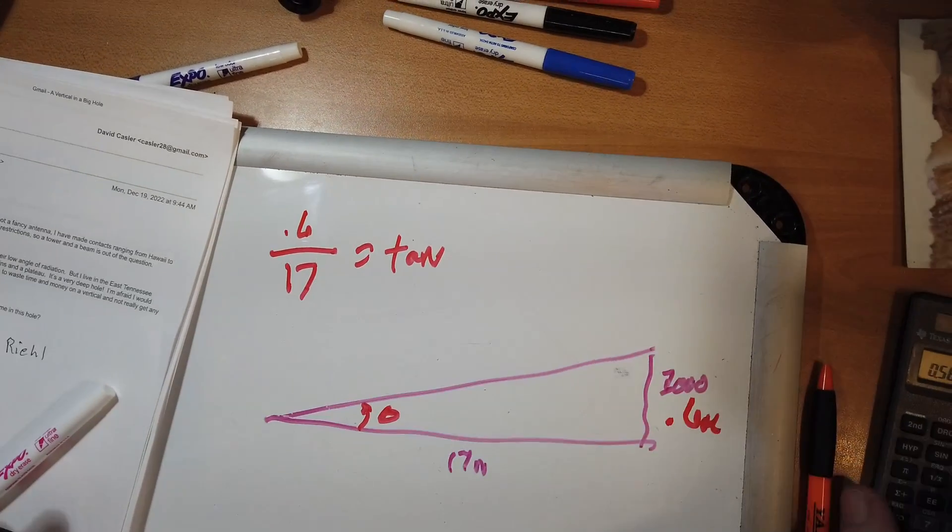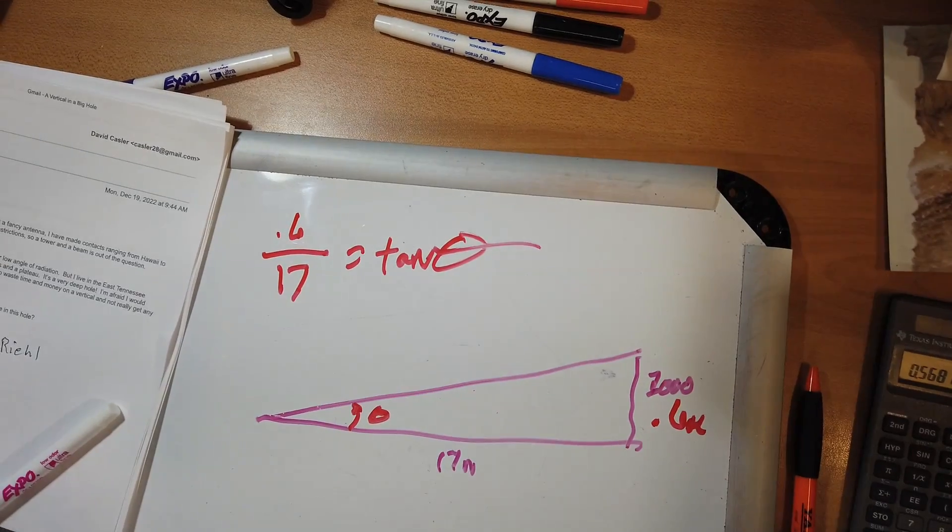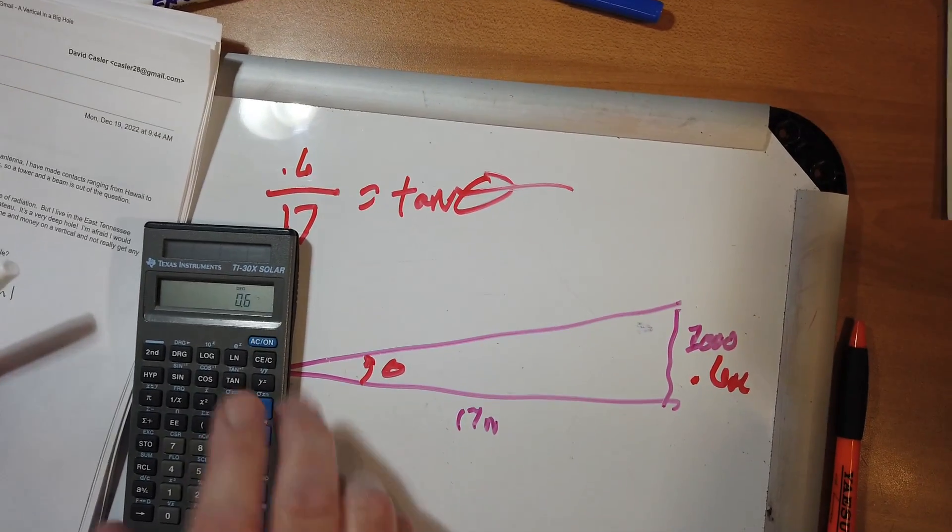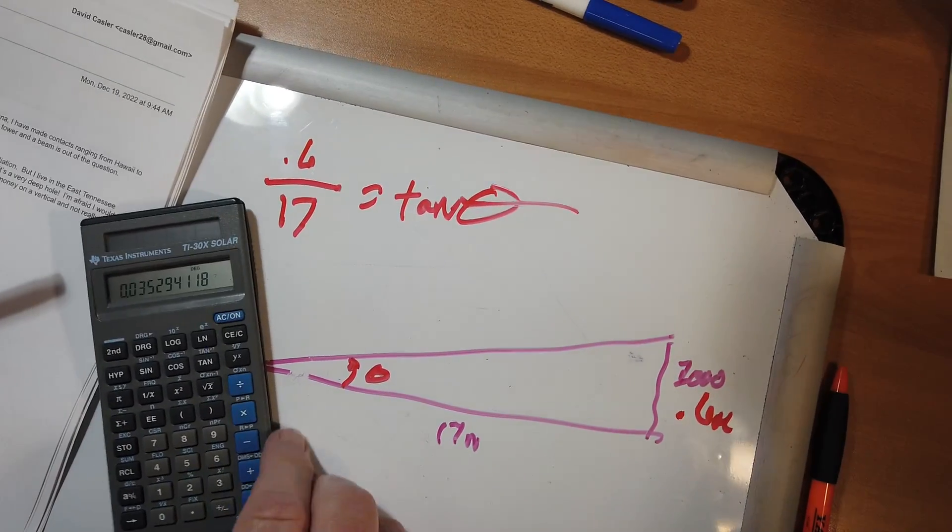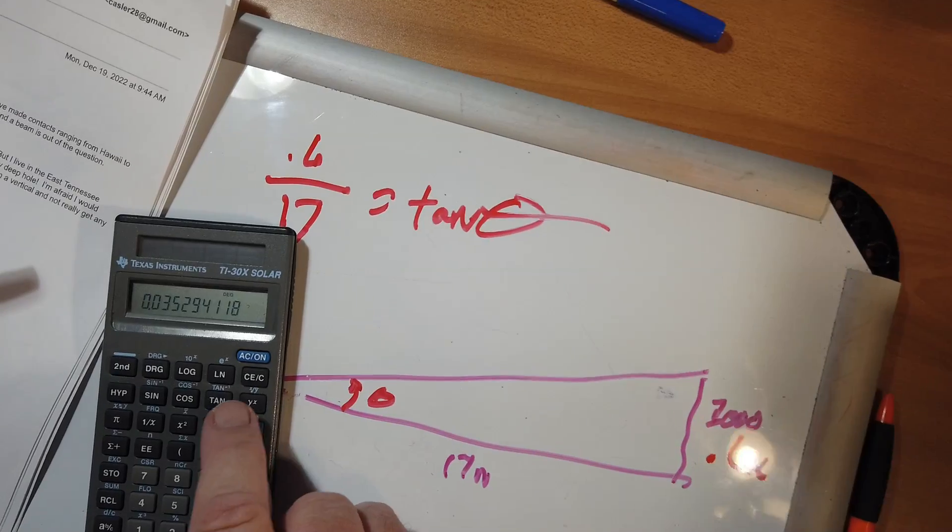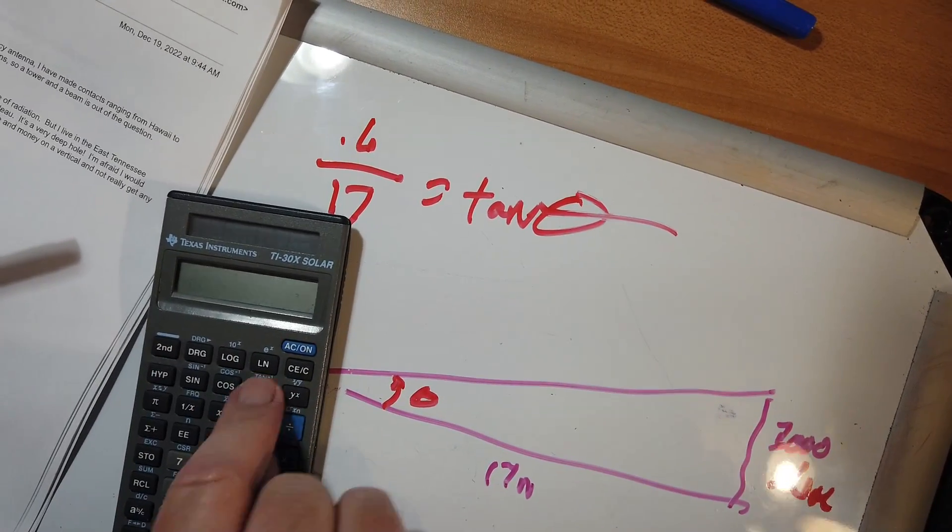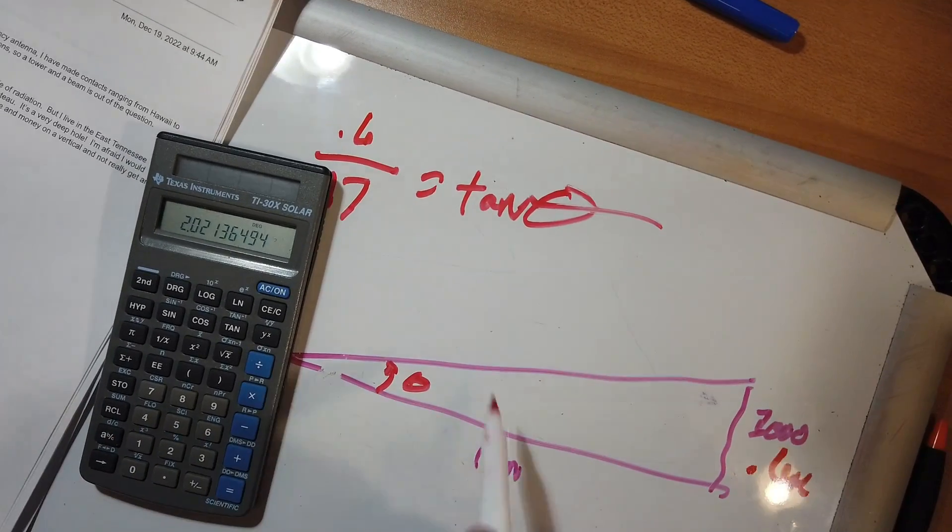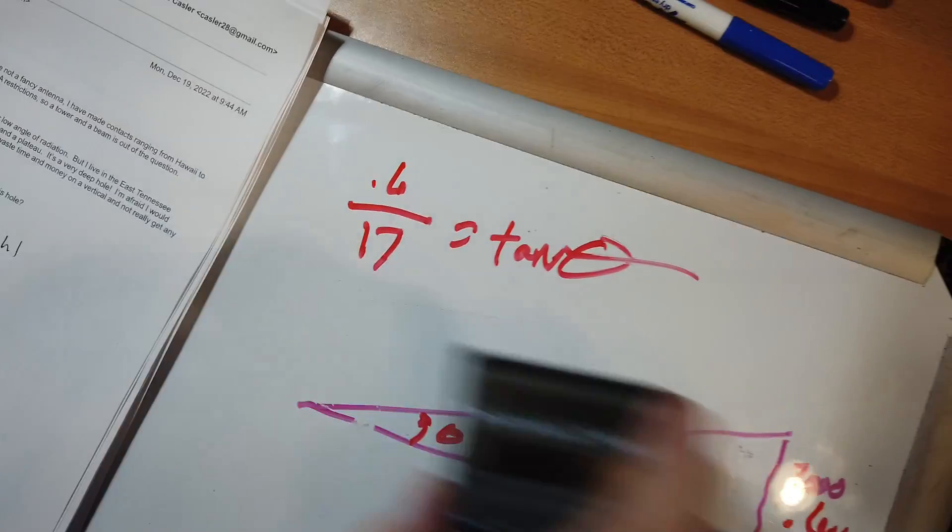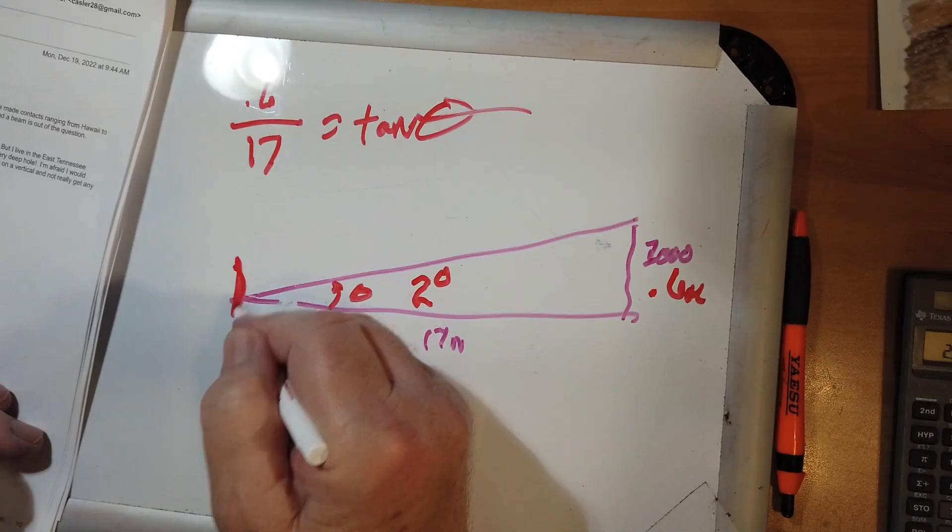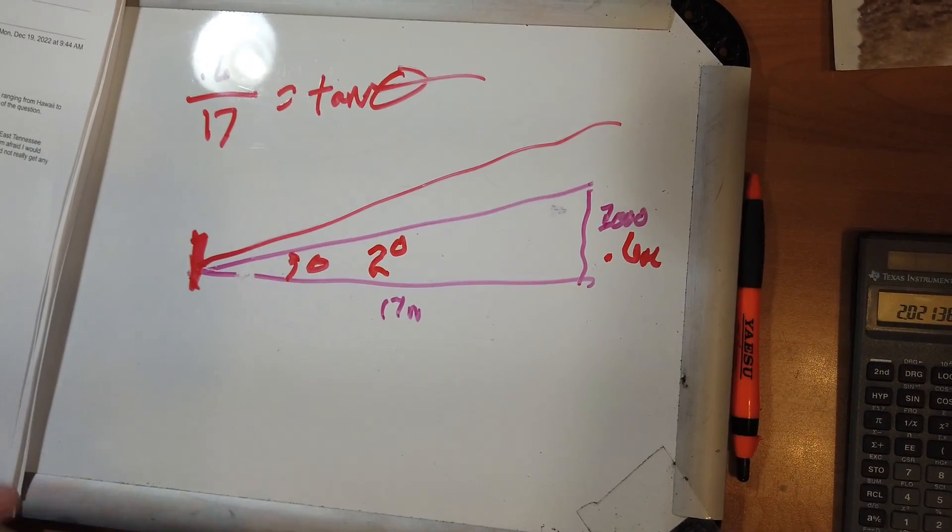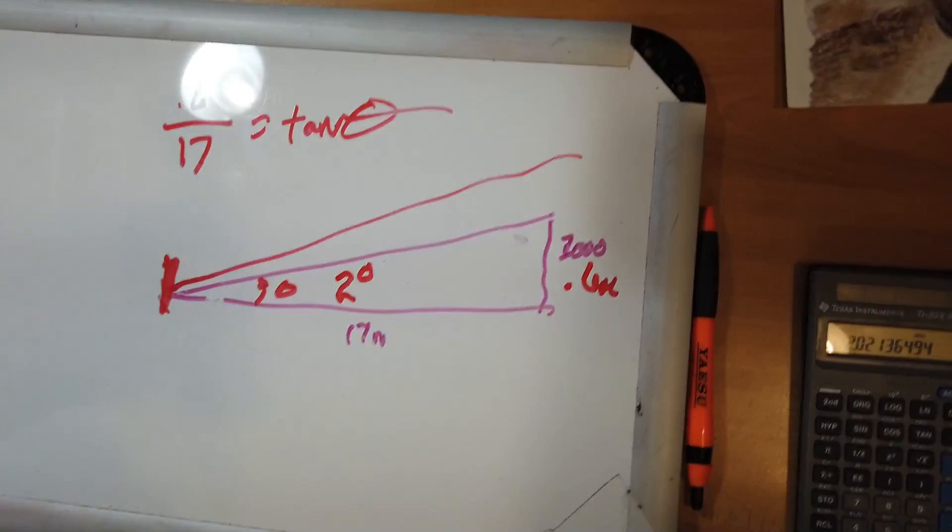So what you do is you take 0.6, divide it by 17. That's the tangent of the angle. So we're going to do the inverse tangent, which is right there. We do second inverse tangent, and that's in degrees, and this is 2, count them, 2 degrees. So a vertical at your location here, which has about a 6 or 7 degree angle, is handily going to go over the top of those mountains. So check that out.